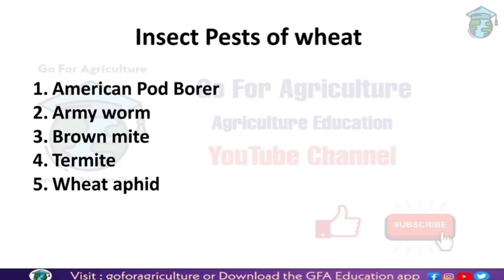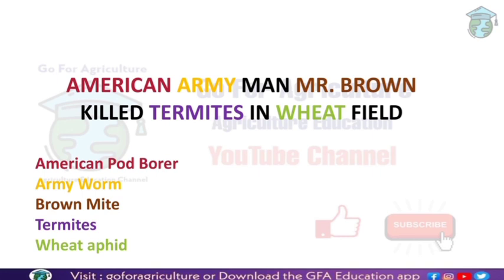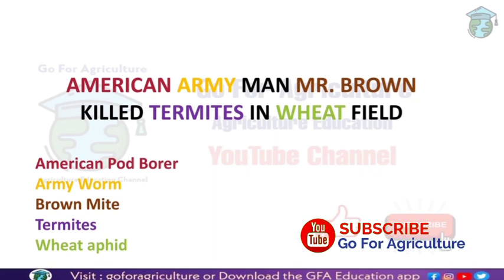So let's start. Here's a sentence - it says: 'American army man Mr. Brown killed termites in a wheat field.' This is a trick to remember the insect pests of wheat. These five words - American, Army, Mr. Brown, Termites, Wheat - are highlighted in different colors. Each word is a clue or hint to remember an insect pest of wheat.